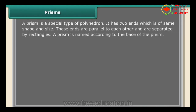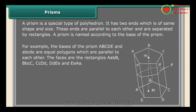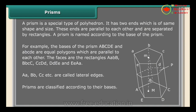A prism is a special type of polyhedron. It has two ends of the same shape and size that are parallel to each other, separated by rectangles. A prism is named according to its base. The bases ABCDE are equal polygons parallel to each other, and the rectangular faces AABB, BBCC, CCDD, DDEE, and EEAA connect them. Edges AA, BB, CC, etc. are called lateral edges. Prisms are classified according to their bases.